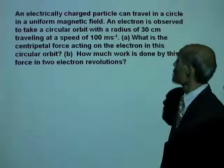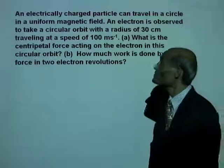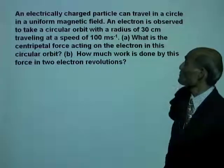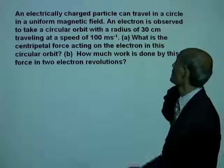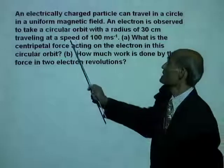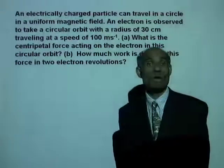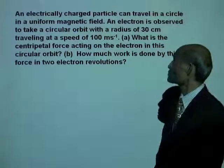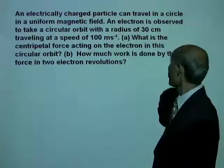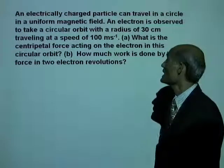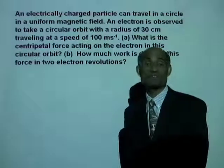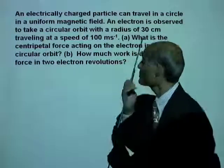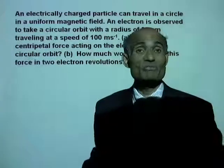An electrically charged particle can travel in a circle in a uniform magnetic field. An electron is observed to take a circular orbit with a radius of 30 cm traveling at a speed of 100 m per second. What is the centripetal force acting on the electron in this circular orbit? We need to find the centripetal force. The equation for centripetal force is mv squared over r.